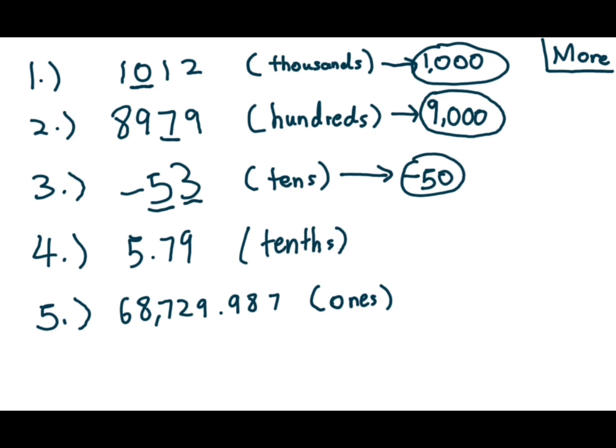Let's take a look at two more examples. 5 and 79 hundredths, rounded to the tenths place, means looking at the hundredths place. 9 is definitely greater than 5. So, the rounded version is 5.8 or we can say it as 5 and 8 tenths.